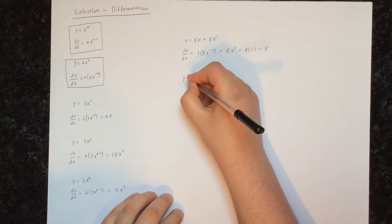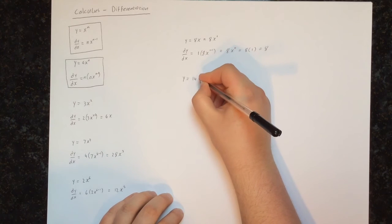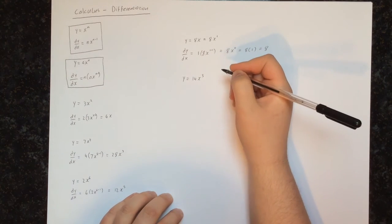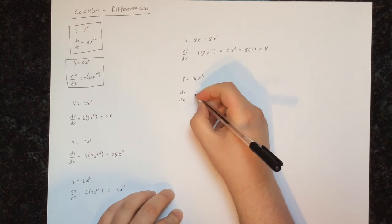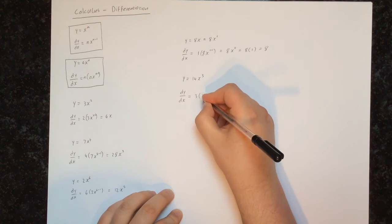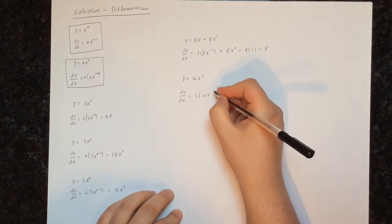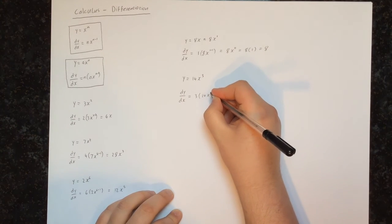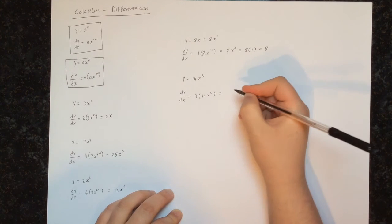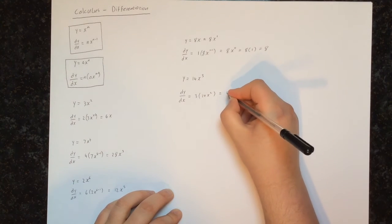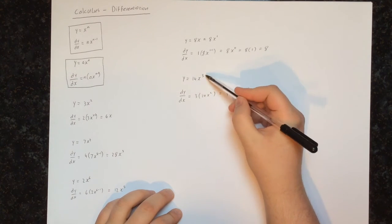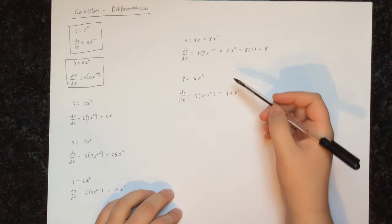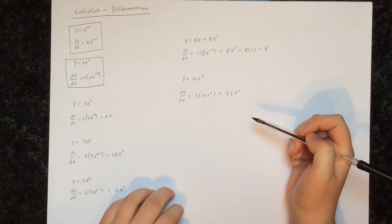Let's try y equals 14 times x to the power of 3. The derivative is given by multiplying by the power 3 and reducing the power by 1, so 3 minus 1 is 2. We have 14 times 3, which is 42, times x squared. So differentiating 14x cubed gives the derivative 42x squared.